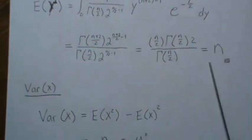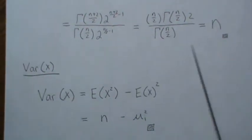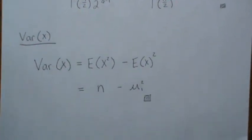The expected value of the chi distribution squared is n, and the mean we called μ₁, which we square. So the variance is n minus μ₁².